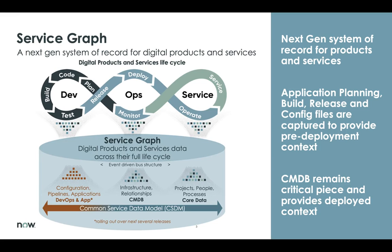A good example in DevOps is being able to understand whether application updates, code changes, or config changes are impacting performance, with traceability back to specific teams and technical changes. Or being able to proactively manage change within the CI/CD pipeline and identify problems before they get pushed into production. And even on the business side, being able to have a complete cost picture associated with delivering a service, both human and technology, in dollars and in time. Those are some of the outcomes that ServiceGraph will provide, and you'll start to see this strategy rolled out over the next few releases of ServiceNow.